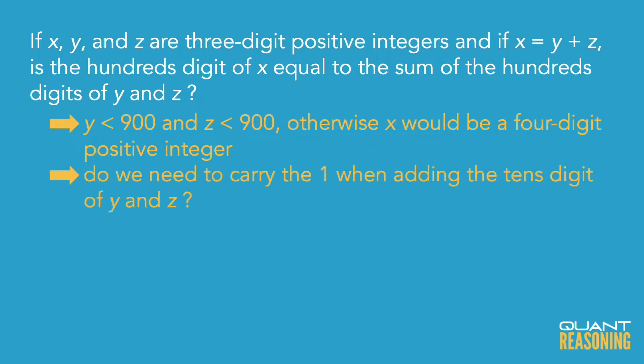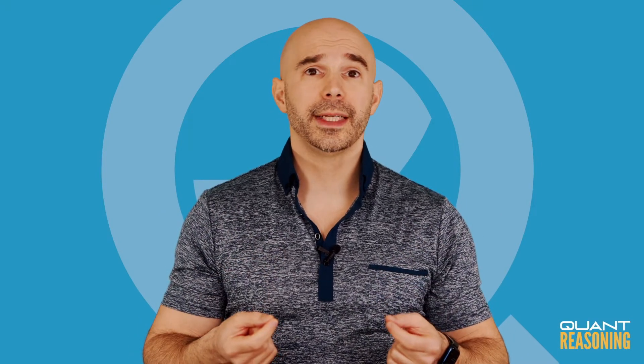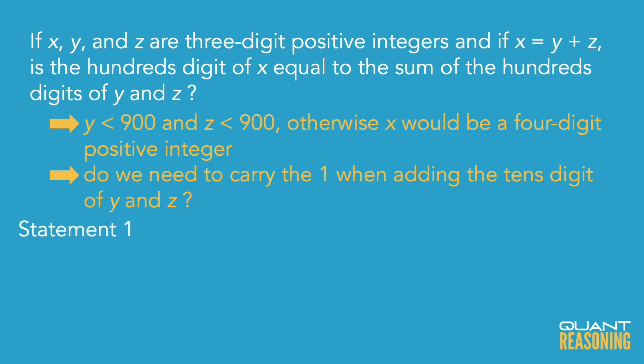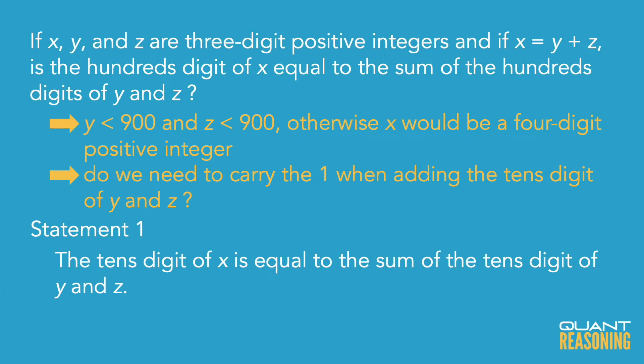I don't mind if we have to carry the one from the units digit to the tens digit, because the question isn't about the tens digit. What I care about is whether, when we add the tens digits, do we have to carry the one into the hundreds digit, because that would give us a no. But if we don't have to carry the one, that's a yes. Doing all of this thinking before we go to the statements makes it fairly easy to evaluate them, because statement one tells us exactly what we needed to know — it's talking about the tens digits.